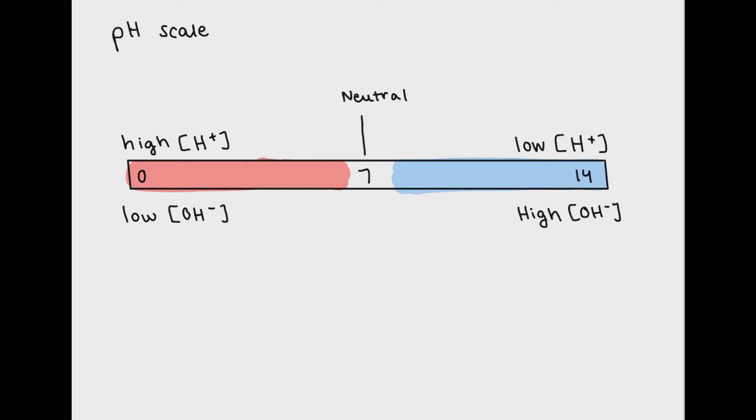On the far left-hand side, we can see that there's a high H-plus concentration, which corresponds with a very low pH. A low pH represents a substance that is actually very acidic, while a high pH represents something that is low in H-plus concentration.